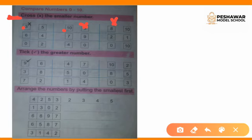6 and 4: 6 is larger than 4 and 4 is smaller than 6, so we will cross the 4. Next, 7 and 9: 7 is smaller than 9, so we will cross the 7 because the question is asking us to cross the smaller number.